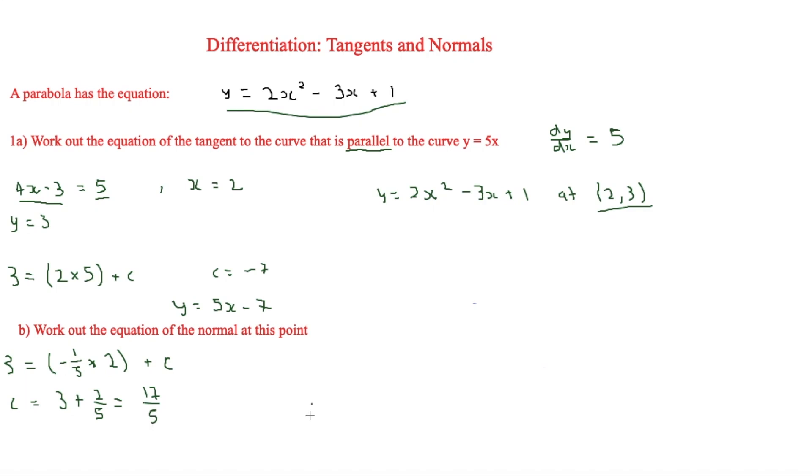So therefore, our final answer to this is y equals minus 1/5 x, and then that's going to be plus 17 over 5.